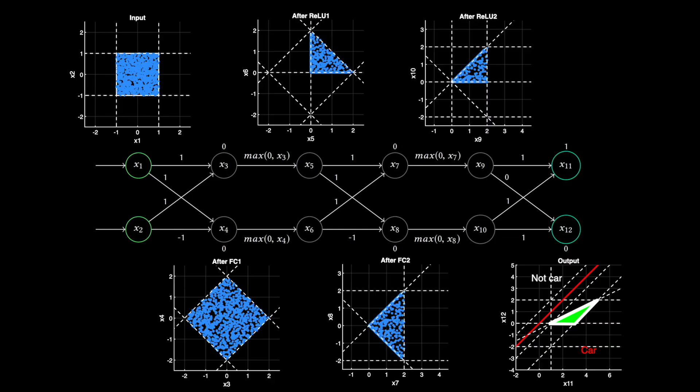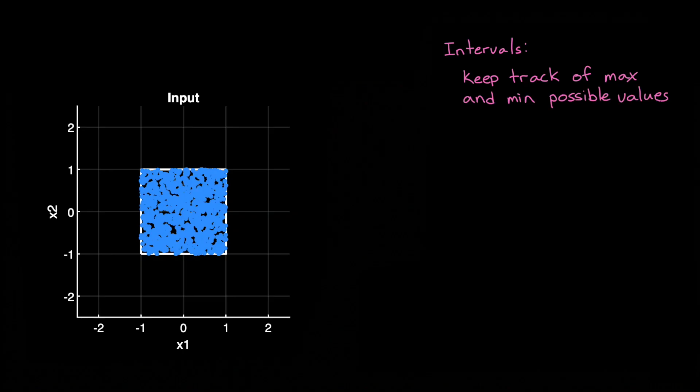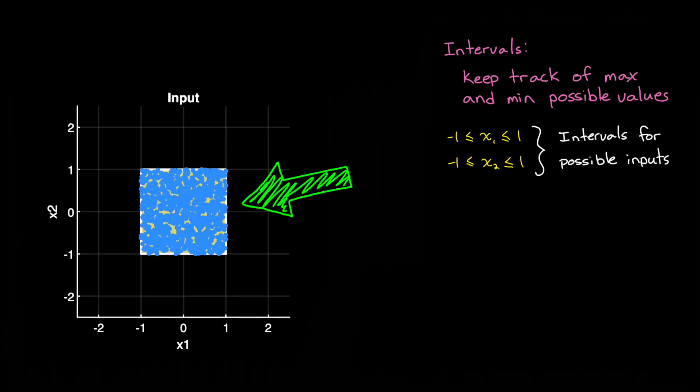Luckily, there's another approach that we can use that doesn't require linear programming, and that is by defining the feasible input space using intervals. With intervals, we're not tightly bounding the space like we did with polyhedra, but instead we're just keeping track of the maximum and minimum possible values. So the intervals for the range of possible inputs for our example is that both x1 and x2 lie between minus 1 and 1. This produces this yellow square as the potential set of inputs. Now, so far this looks exactly like the polyhedra approach, but you're going to see shortly how it's different. But the first thing we need to do is talk about interval math.